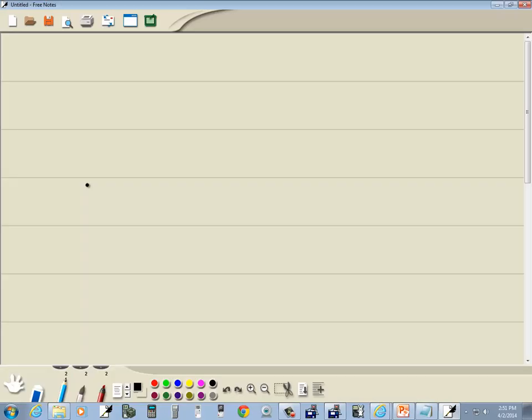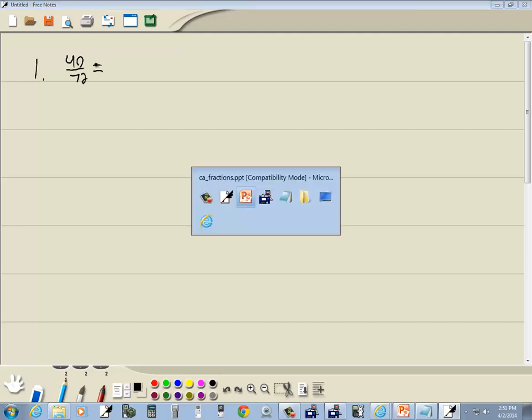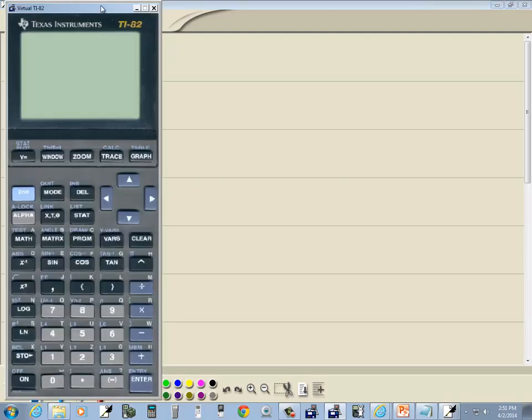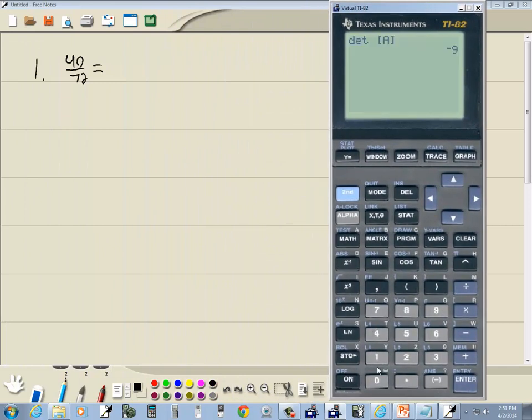Now I want to simplify this. 40 over 72. We'll do 40 divided by 72, enter, and you get a decimal. And then we do math, and you see fraction is our first one there.